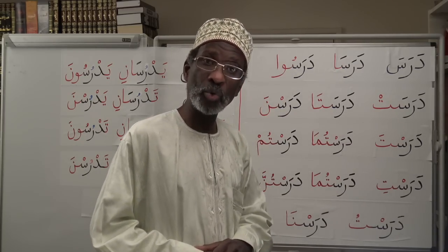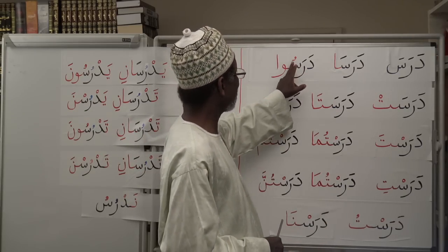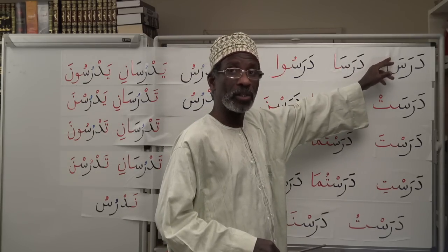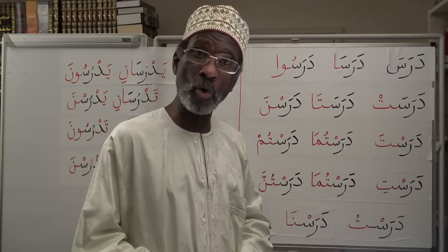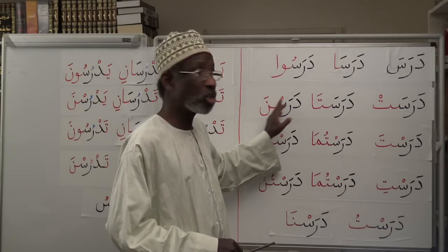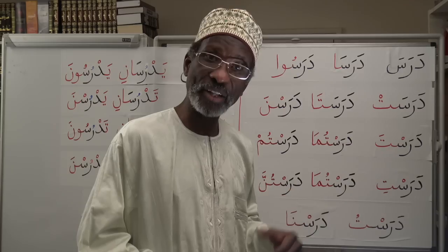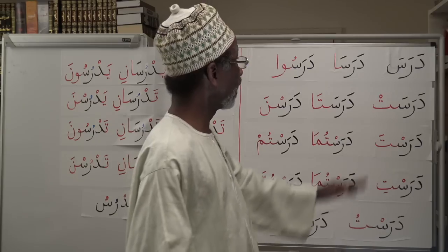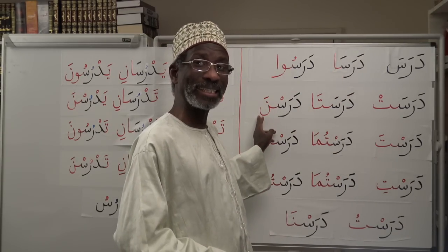Plural: Darasu — they, three or more masculine, studied. This is the first time we're amending the last vowel on the third root letter. The uu ending means three men or boys studied. In the feminine equivalent, we change the fatiha into sukun — Daras — and then we add na to indicate the plural for feminine. Darasna. So: Darasa, Darasat, Darasa, Darasata, Darasu, Darasna.